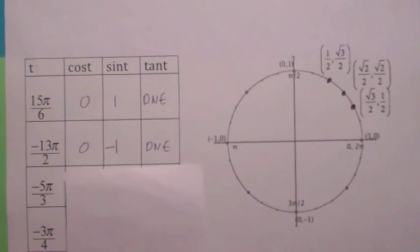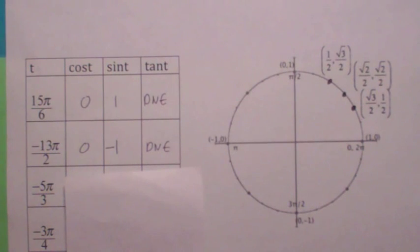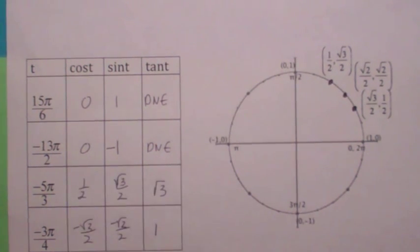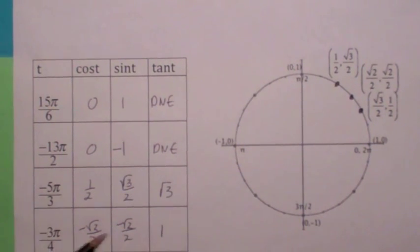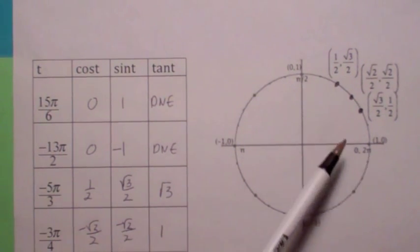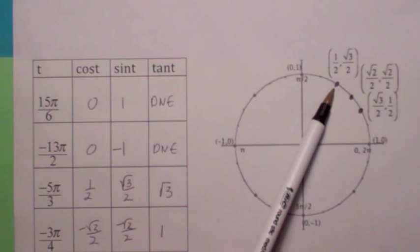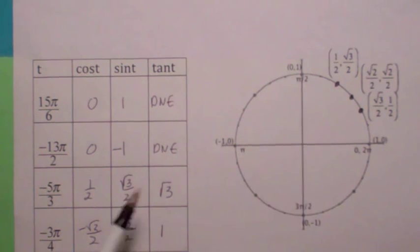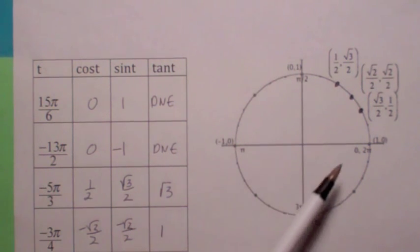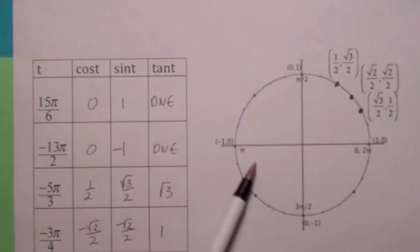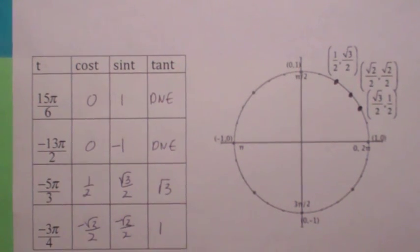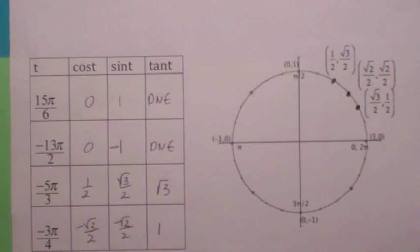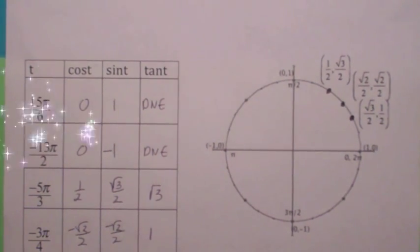For t = -5π/3, that puts you in the first quadrant. And -3π/4 puts you in the third quadrant. All right, we'll see you next time — bye-bye.